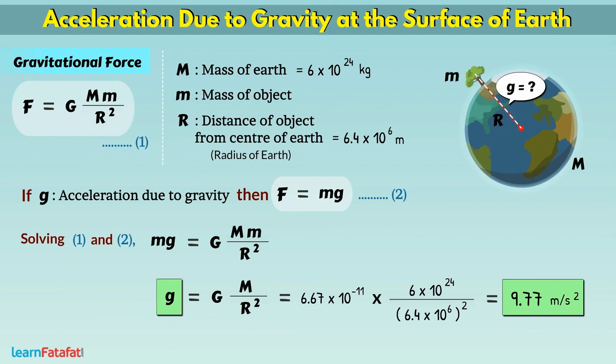At a given point on the surface, the value of g is constant for all objects, regardless of object properties.